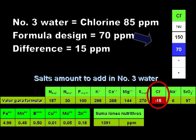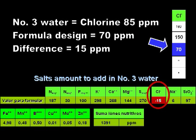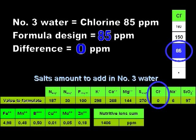However, we can change that figure 70 to 85 in our design formula. Automatically, this will result in zero of chlorine ions to add.